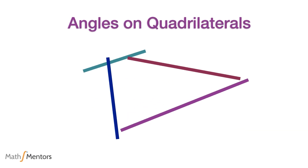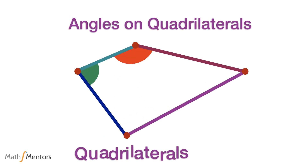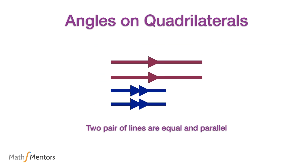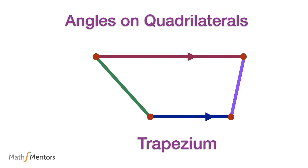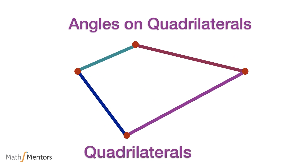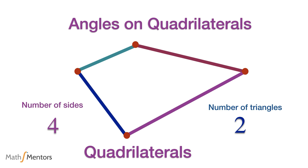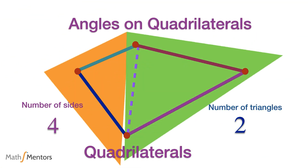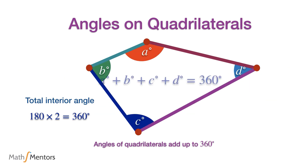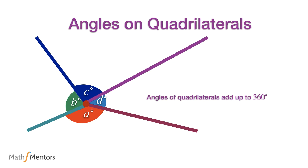A four-sided polygon is called a quadrilateral. There are many different kinds of special quadrilaterals, which are covered in other videos on angles and quadrilaterals. If we choose any vertex from a quadrilateral and draw a line from that vertex to the opposite vertex not already joined by a line, this divides the quadrilateral into two triangles. As each triangle adds up to 180 degrees, the interior angles on a quadrilateral are twice that amount, which is 360 degrees.